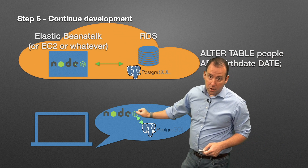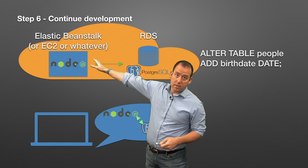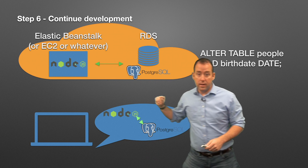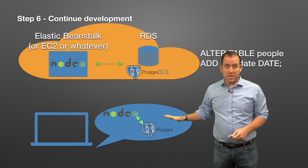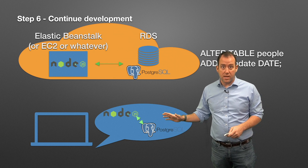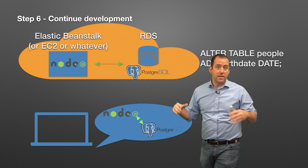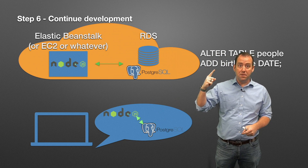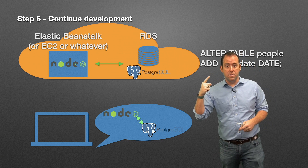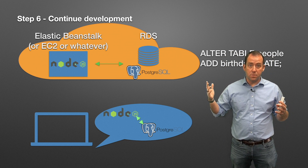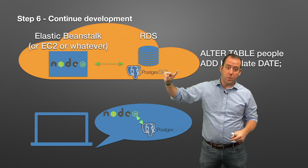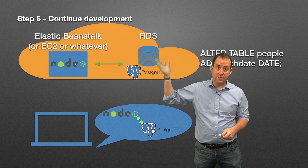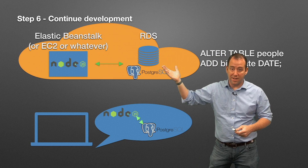When you update your code and send a new version to Elastic Beanstalk, you also need to run your database migrations or alterations — adding columns, adding tables, deleting things — on your cloud database as well. Because your code is now expecting 'birth date' to be there, and until you tell the cloud database that 'birth date' needs to be there, it won't be.